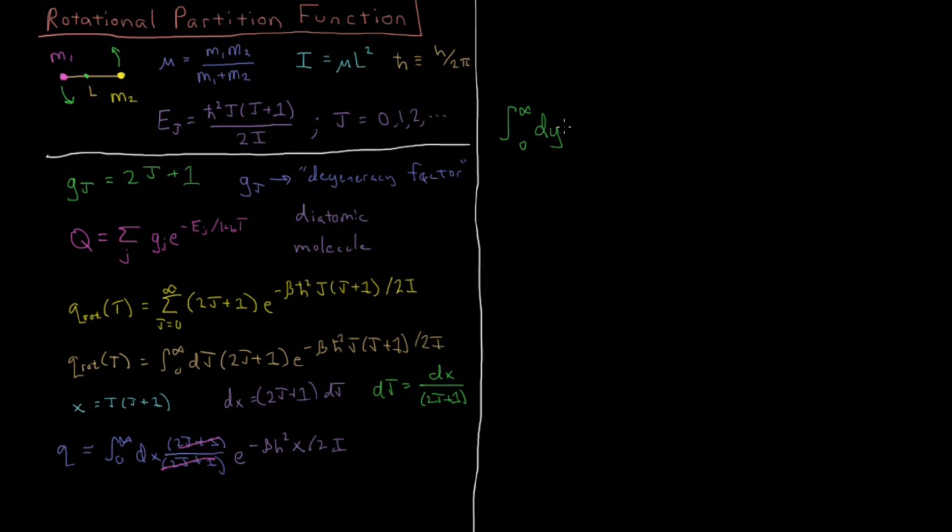So really what we have is we need to find the appropriate integral from 0 to infinity of dy of e to the minus alpha y. If we evaluate that definite integral, it's going to end up coming out to be just 1 over alpha.